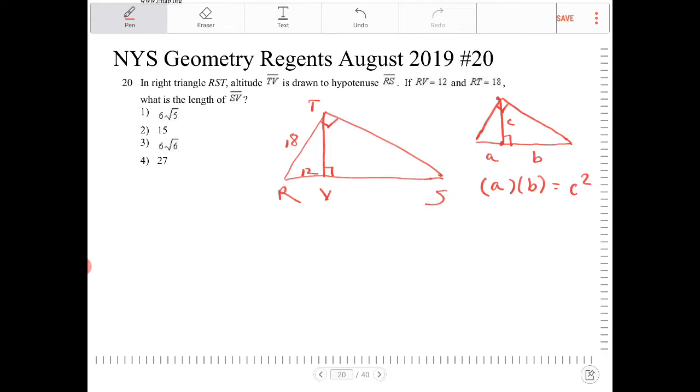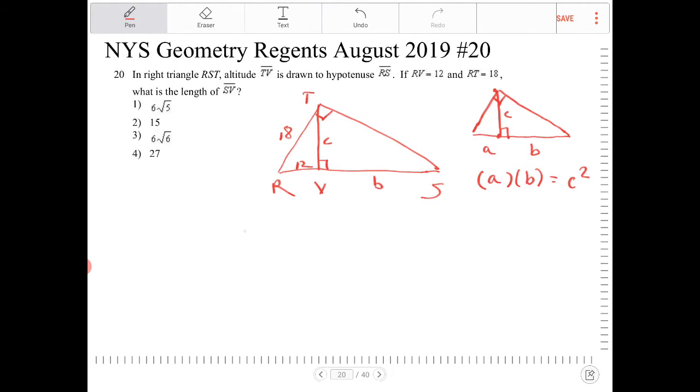Okay, so let's call VS here, let's call that B, and let's call TV here C. So what we know is 12 squared plus C squared is equal to 18 squared.